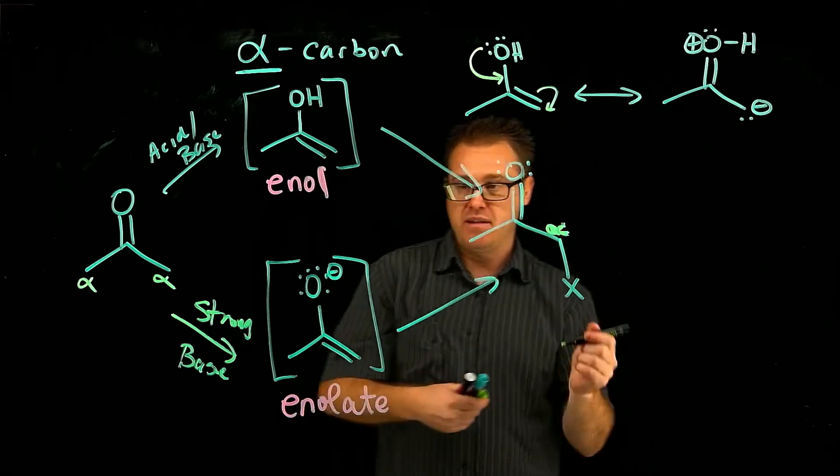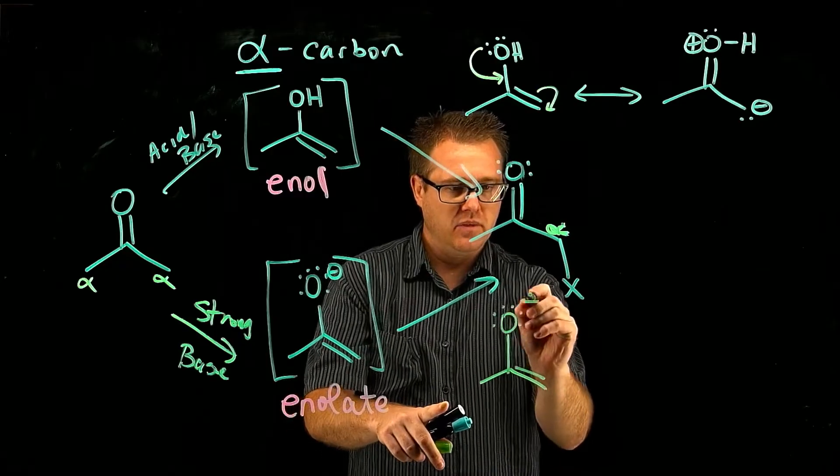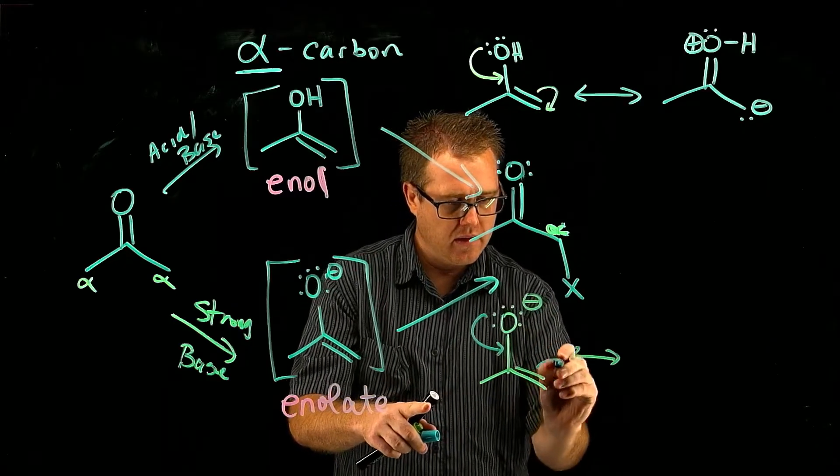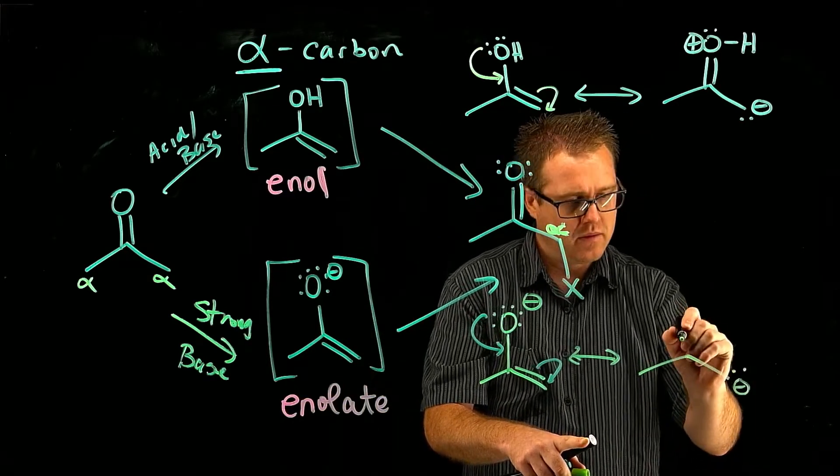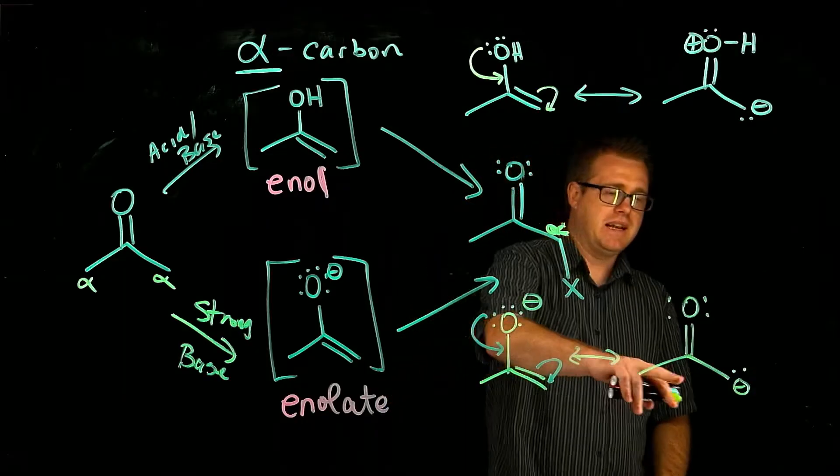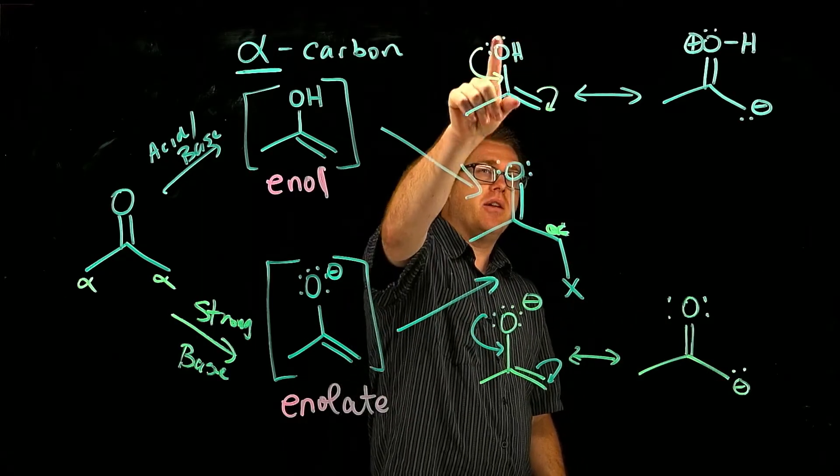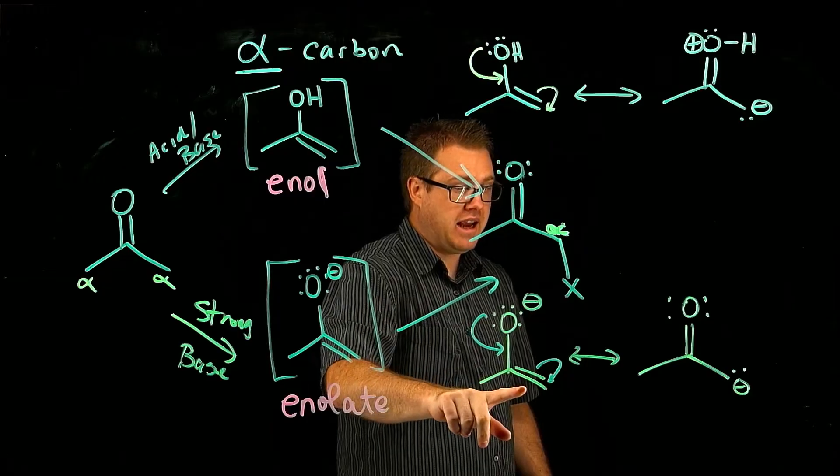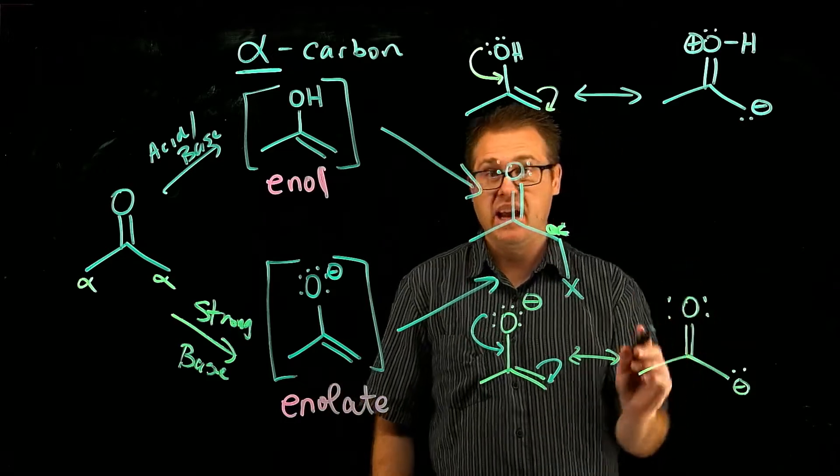But when you take a look and compare the enolate, if you have an enolate, we can have a resonance in its structure that looks like this. Now we see a negative charge on that carbon, the alpha carbon. But when you compare the enol and the enolate, do you see how this guy's neutral, has a partial negative, but this guy, the enolate, has a full-blown charge. Because that has a full-blown charge, that just makes the enolates more reactive.